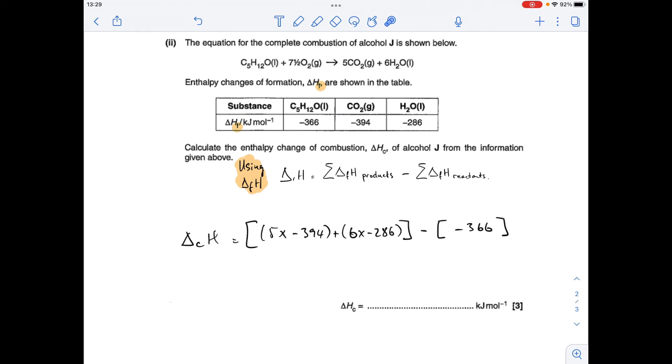So put the numbers in. We've got five moles of CO2 in the equation - this value is just for one mole, so we multiply by five. Add that to six times the water formation value, and then subtract from that the enthalpy change of formation of the alcohol. We don't need a value for the oxygen because it's an element - its enthalpy change of formation is zero. So the final answer comes out at minus 3320 kilojoules per mole.